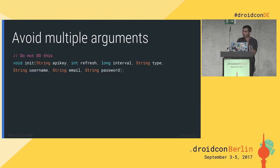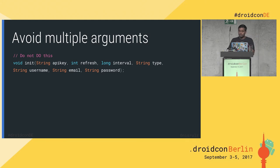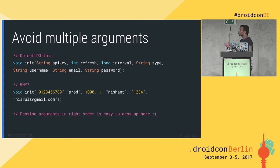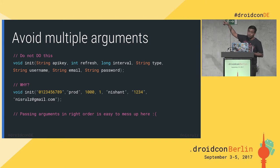Now I'm getting into more technical stuff — what are the things you should not be doing versus what you should be doing. The first one is: avoid multiple arguments. The code with multiple arguments is easy to mess up the order. In the example I'm showing, the second argument should be an integer, but it's a string right now — 'int refresh' is now 'prod' as a string, which is very easy to mess up.